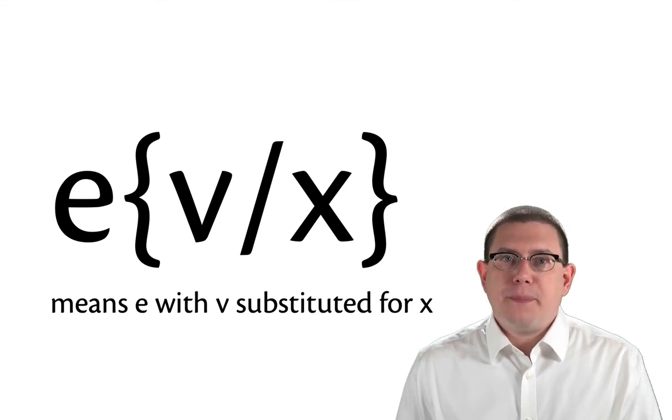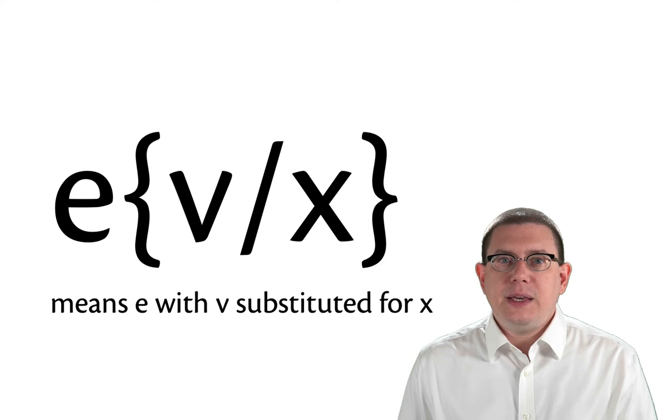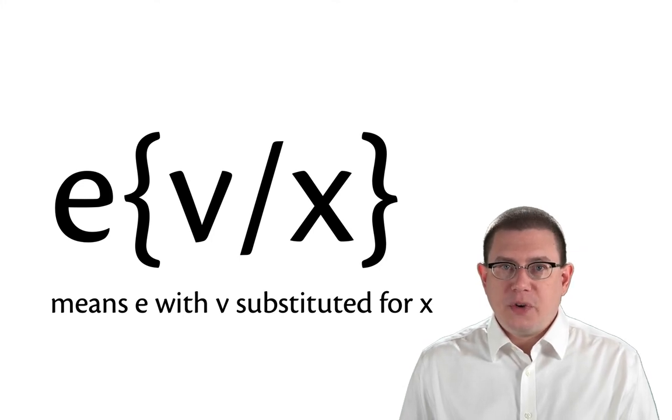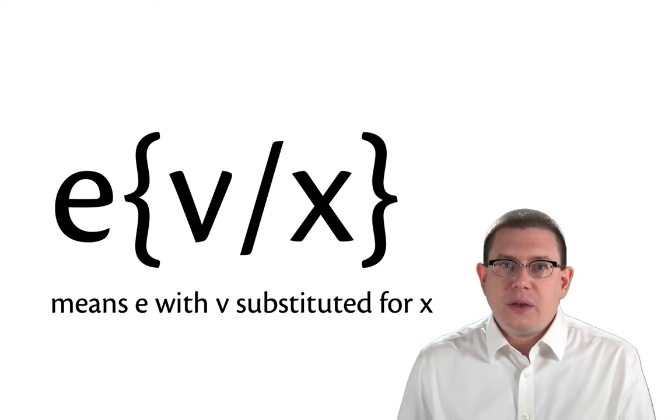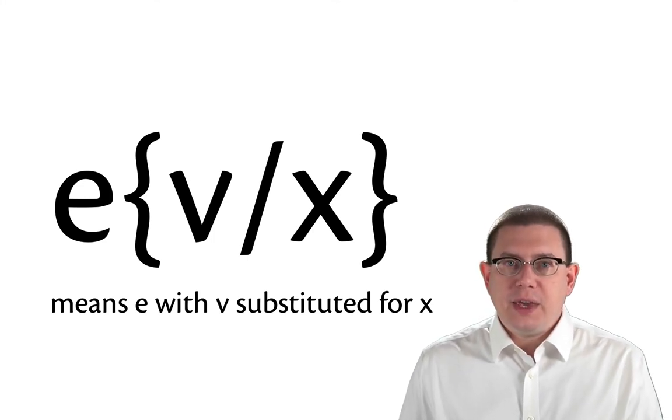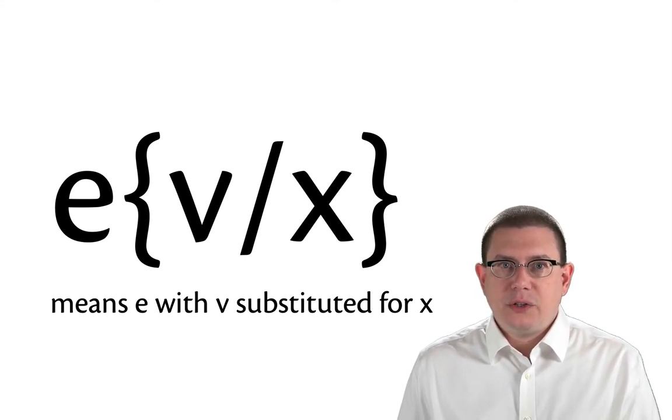Let's introduce a piece of notation for substitution. I'm going to write e and then curly braces and inside the curly braces v slash x to mean e with v substituting away all occurrences of x. So wherever we see an x, we're going to replace it by v.